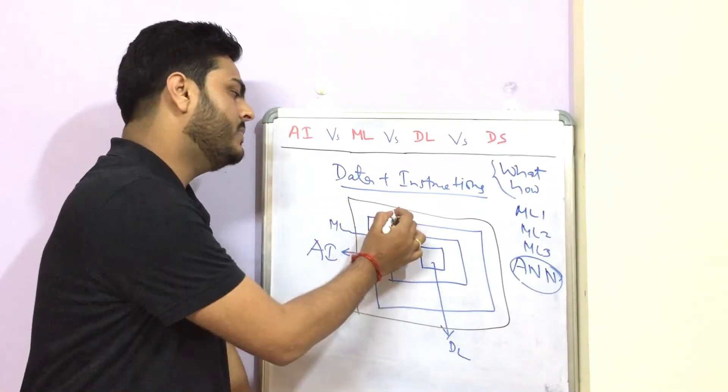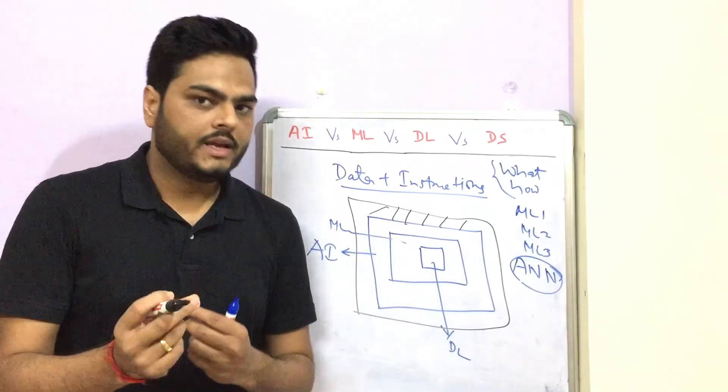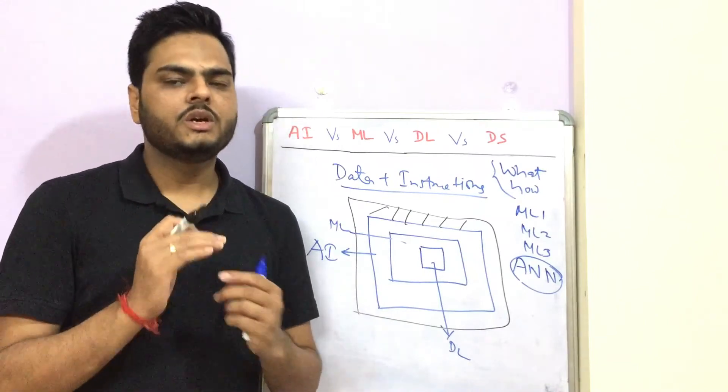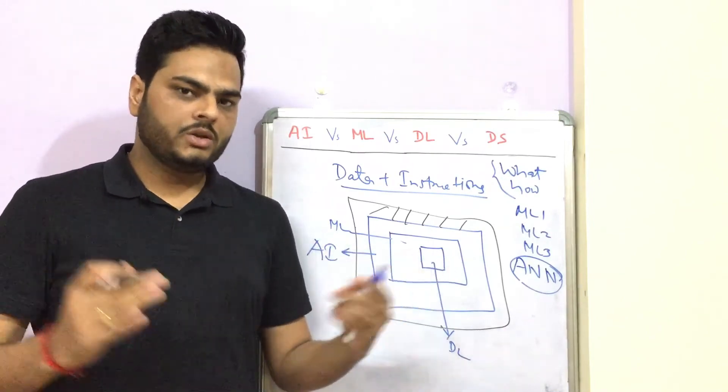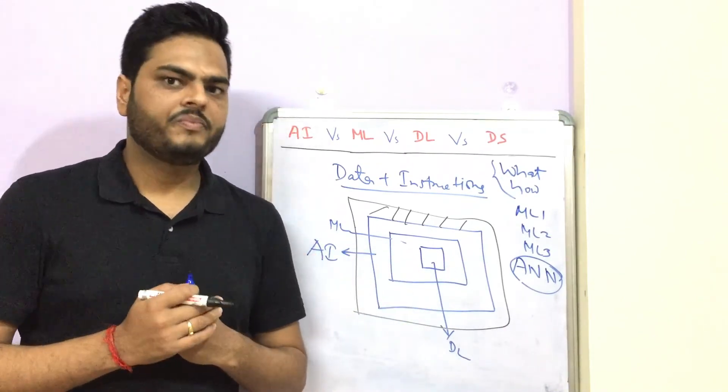Anything that we do with the data is known as data science. So data science will come on top of AI. There are some parts of data science which we cannot call as AI, but that is data science. For example, you take the data in Excel sheet, you do some analysis, present a report to someone. There is no intelligence, no machine learning, no deep learning, but that is again a bit of data science only.